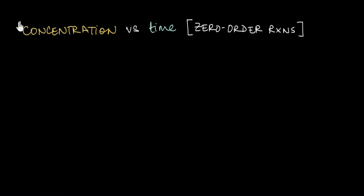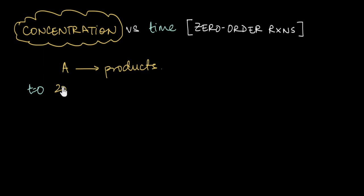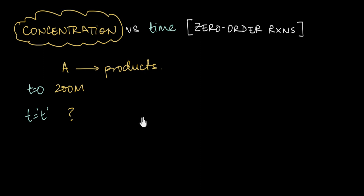In this video, we are going to look at how the concentration of the reactant changes with time for a zero-order reaction. If I have a zero-order reaction, say A giving me products, and initially at time t equal to 0, I started this reaction with 200 molar of A. We'll try and figure out the concentration of A that is going to be left after a certain time t, let's say 10 minutes.